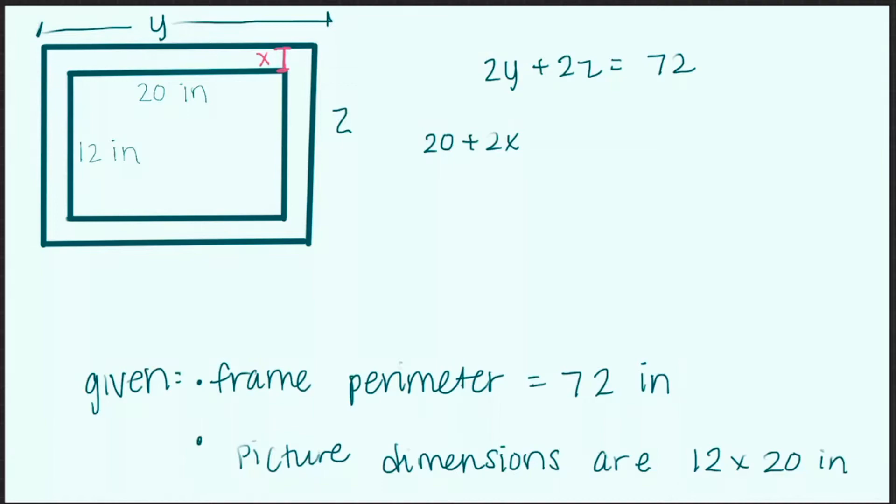Because if this picture is 20 inches, then this extra piece over on the two ends is x, and there's two of them. So 20 plus 2x is that side.